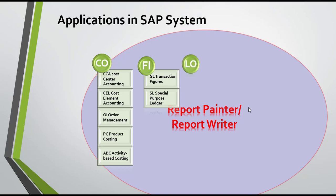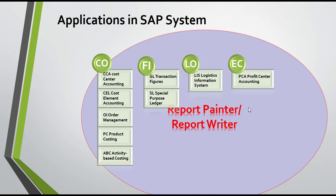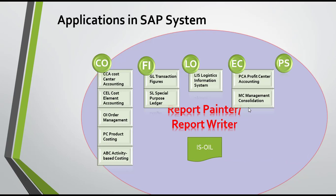Under Logistics, you have Logistics Information Systems. Under Enterprise Controlling, you have Profit Center Accounting — you can use Report Painter or Report Writer for profit center accounting as well. It can also be used for Management Consolidation, Project Systems, and industry solutions such as IS-Oil.